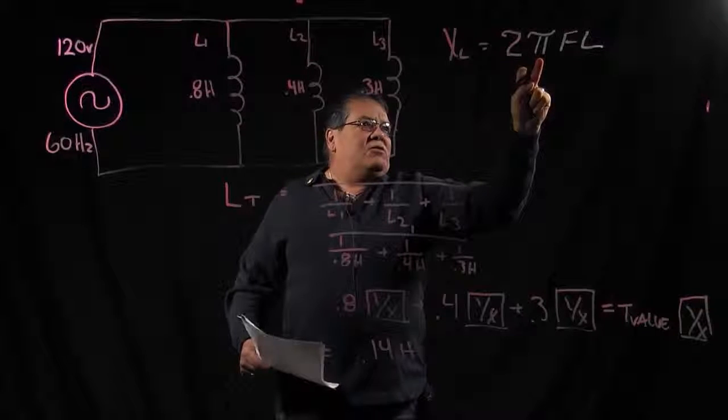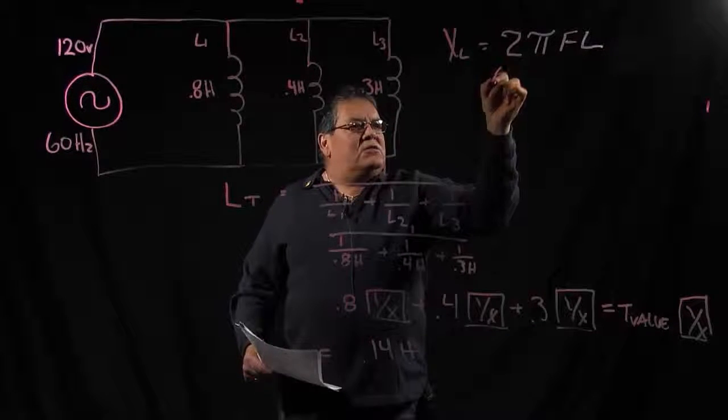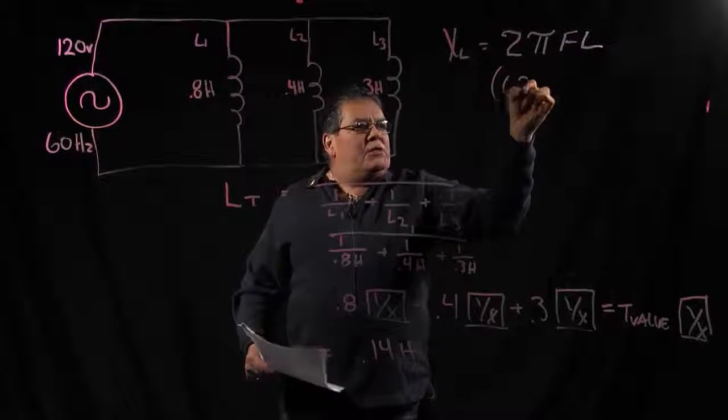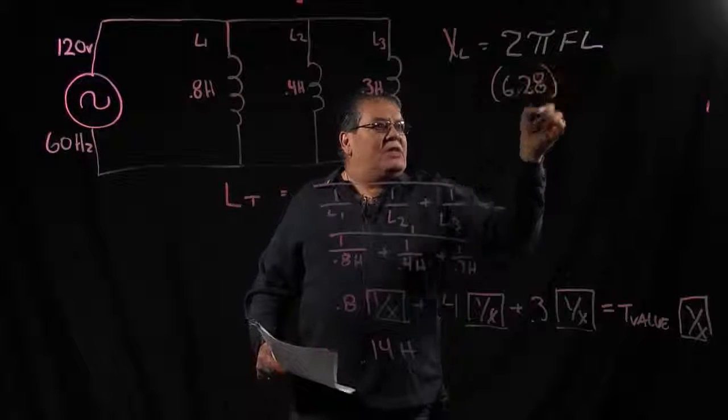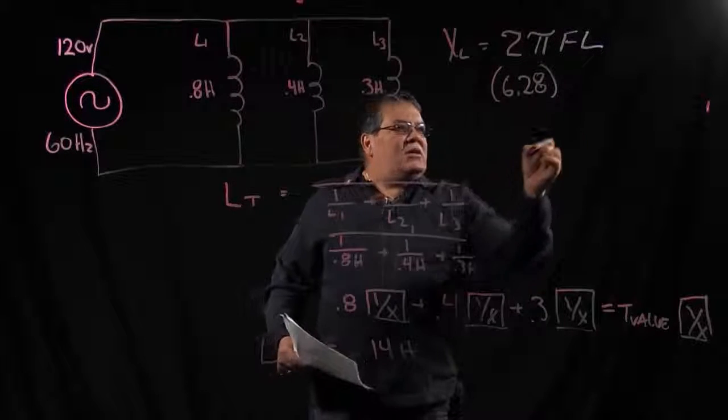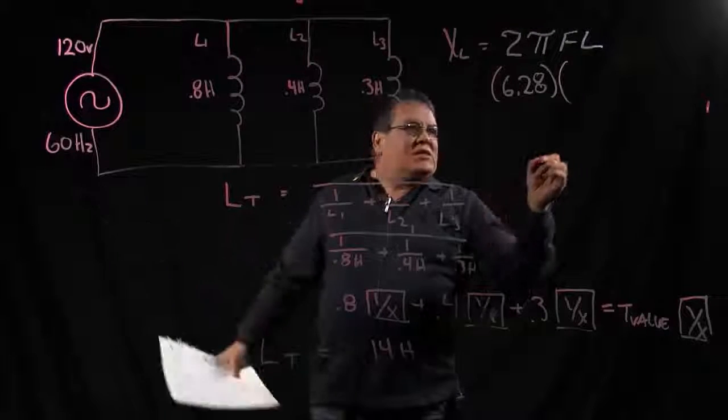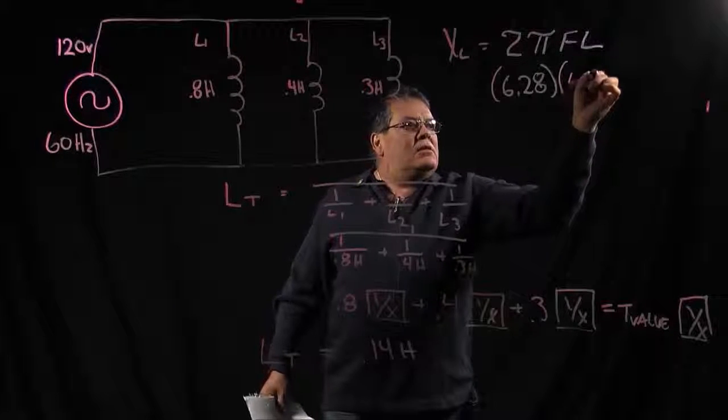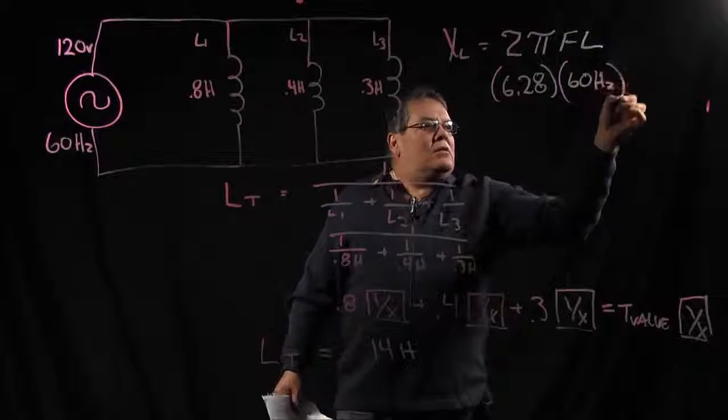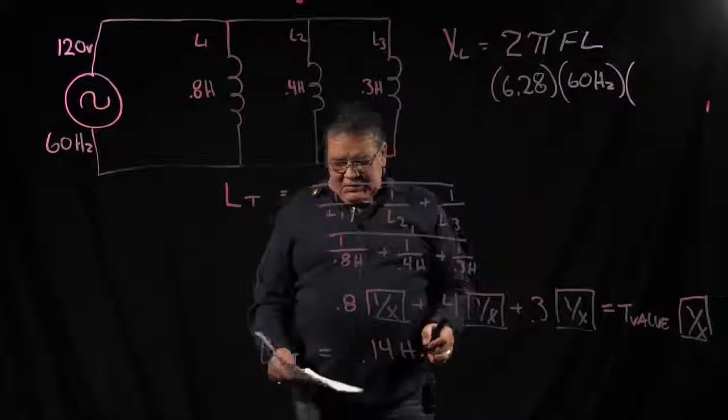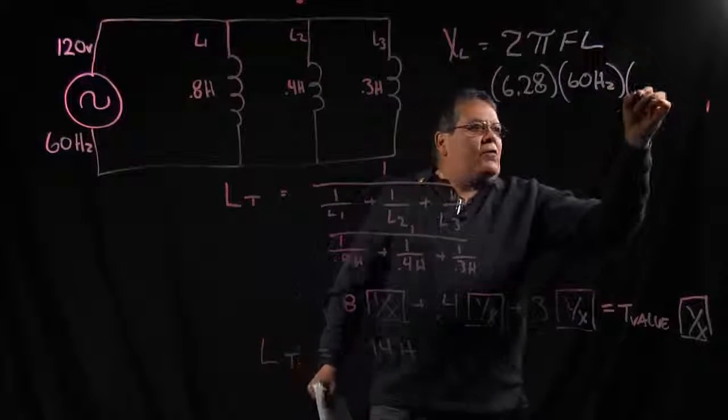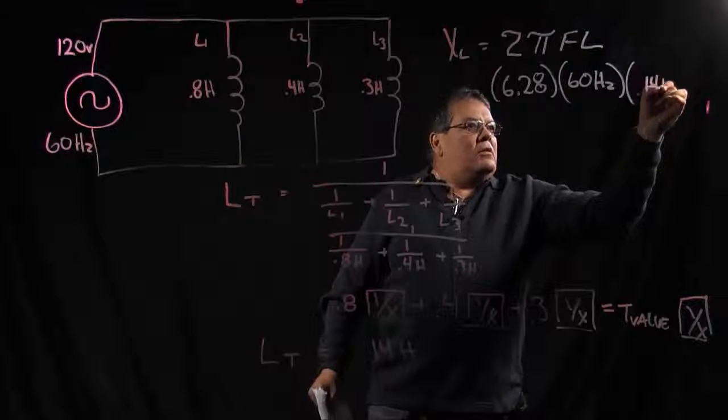2 times pi, pi is equal to 3.14, so again I just use a constant of 6.28 to eliminate too many buttons on the calculator, times our frequency of 60 hertz, and times our inductance of 0.14 henries.